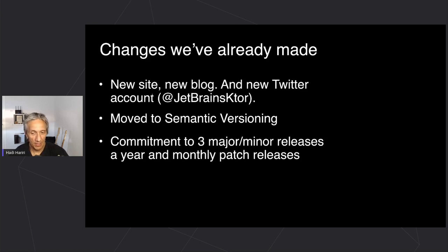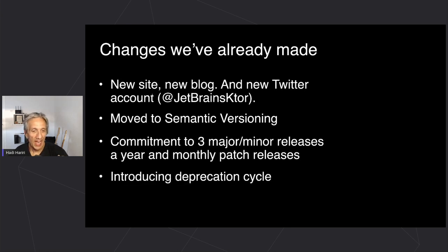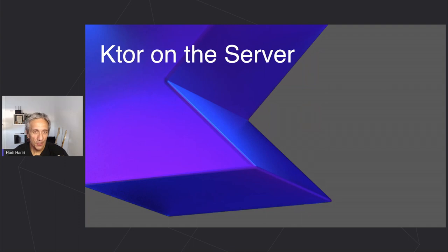We've committed to three major or minor releases a year, plus monthly patch releases. One of the major complaints from Ktor users was that our release process was very infrequent. We're now committed to patch releases with fixes, three major/minor releases per year, and keeping breaking changes to a minimum. If we do have breaking changes, we'll introduce a deprecation cycle — issuing a warning first, then a compiler error in the next release — similar to what Kotlin itself does.